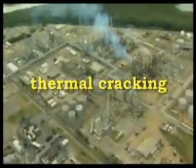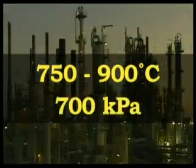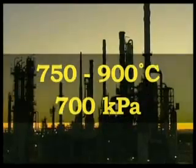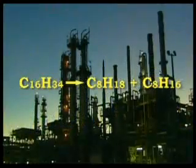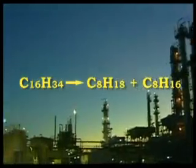Thermal cracking is the simplest and oldest process. The mixture is heated to around 750 to 900 degrees Celsius, at a pressure of 700 kilopascals, around seven times atmospheric pressure. This process produces alkenes, such as ethene and propene, and leaves a heavy residue.